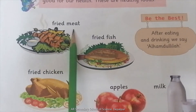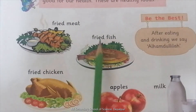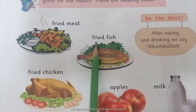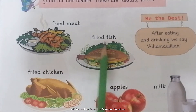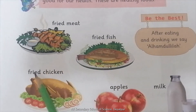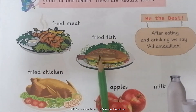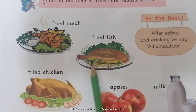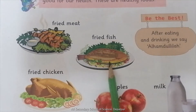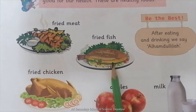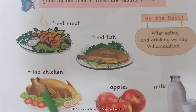और यह sentence के last पे लगाते हैं। And what is this? This is fried fish. आप में से fish किस किस को पसंद है? आप सब को — वाو! What is this? This is fried chicken.